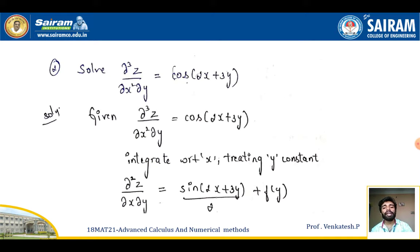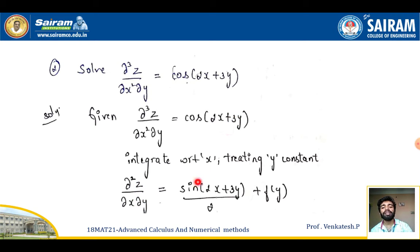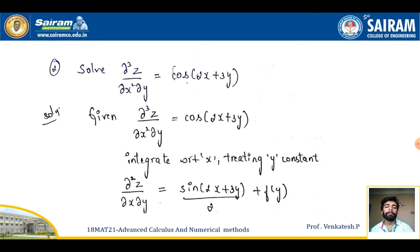Since ∂x² appears, I will integrate with respect to x two times and with respect to y one time. Integrating with respect to x treating y constant, I get ∂²z/∂x∂y = sin(2x + 3y)/2, plus arbitrary constant f(y).